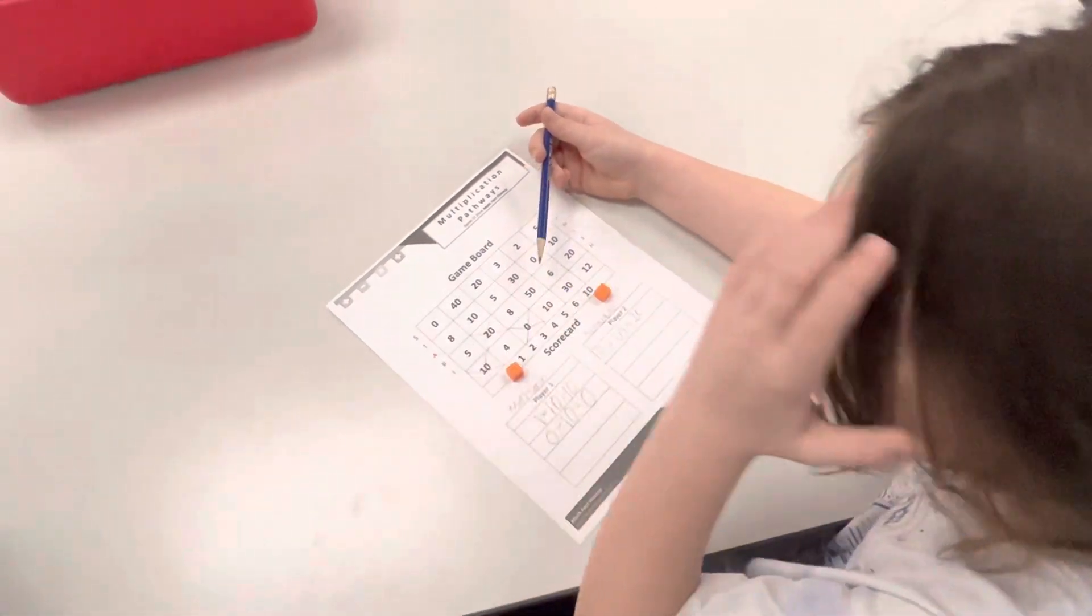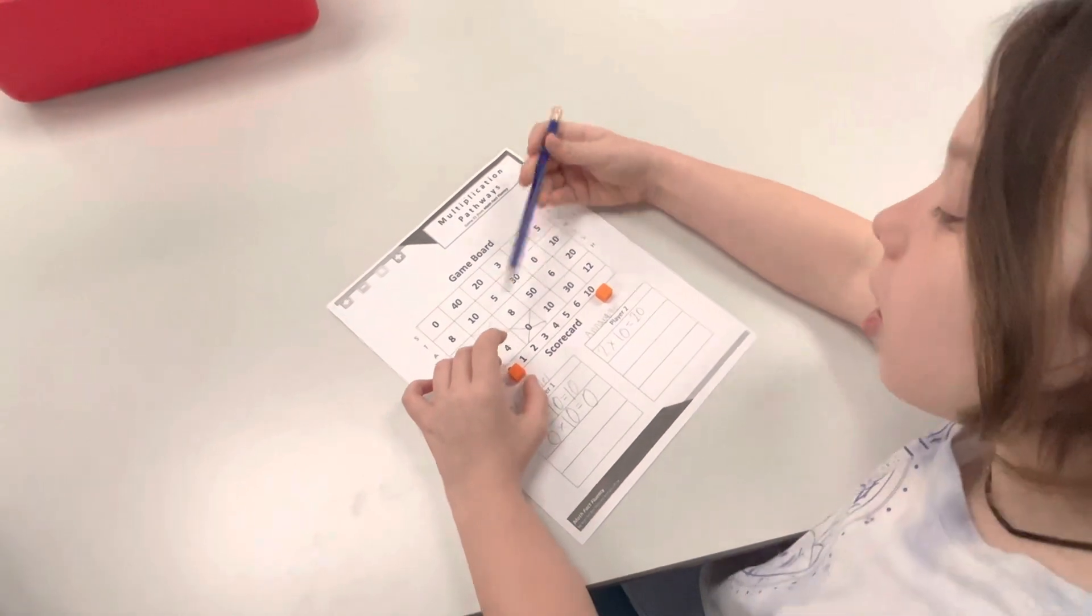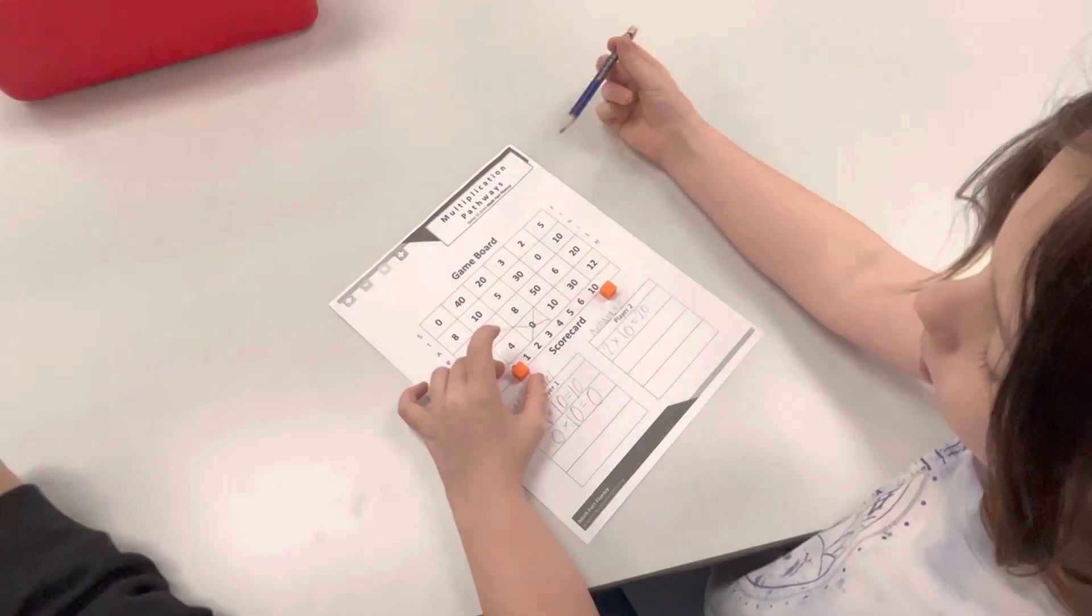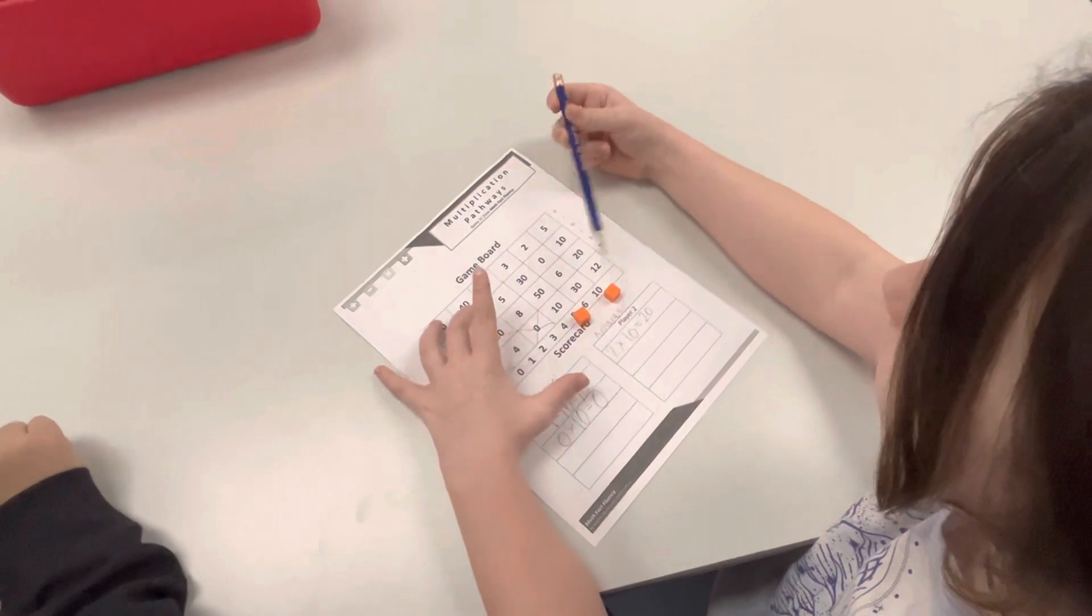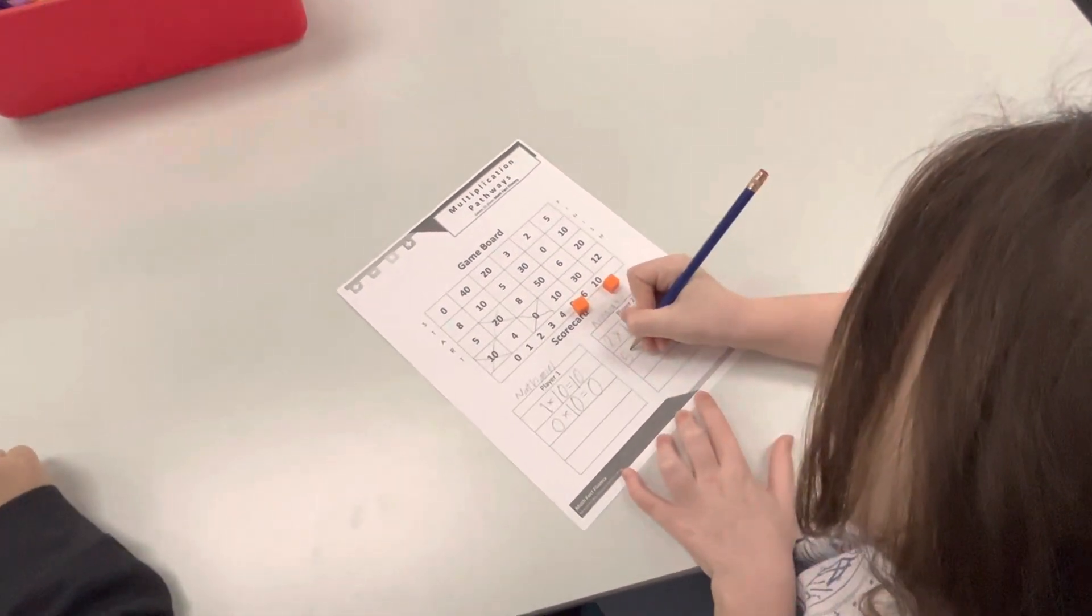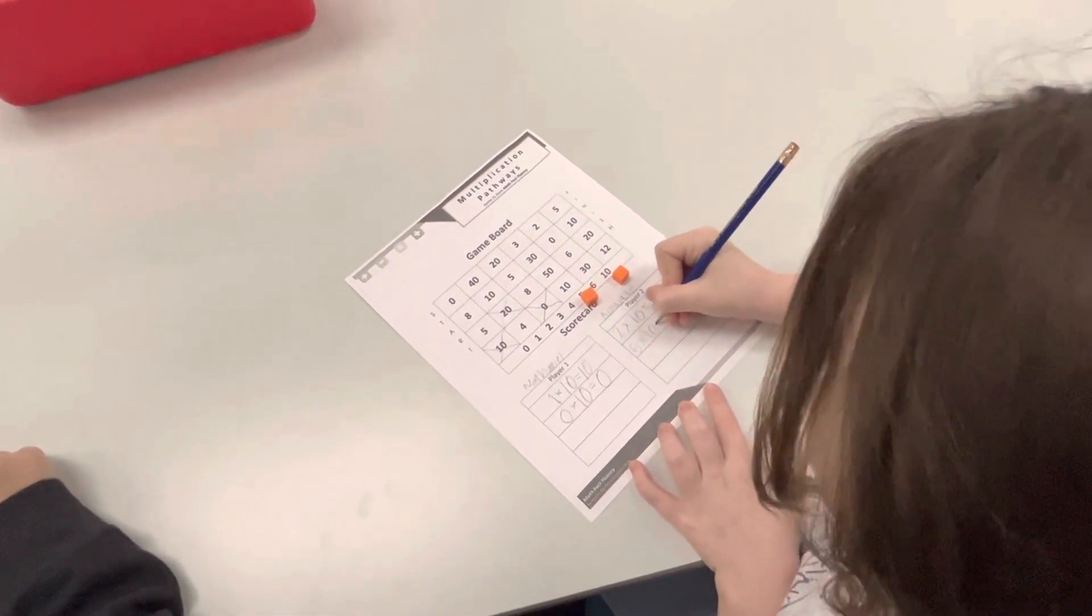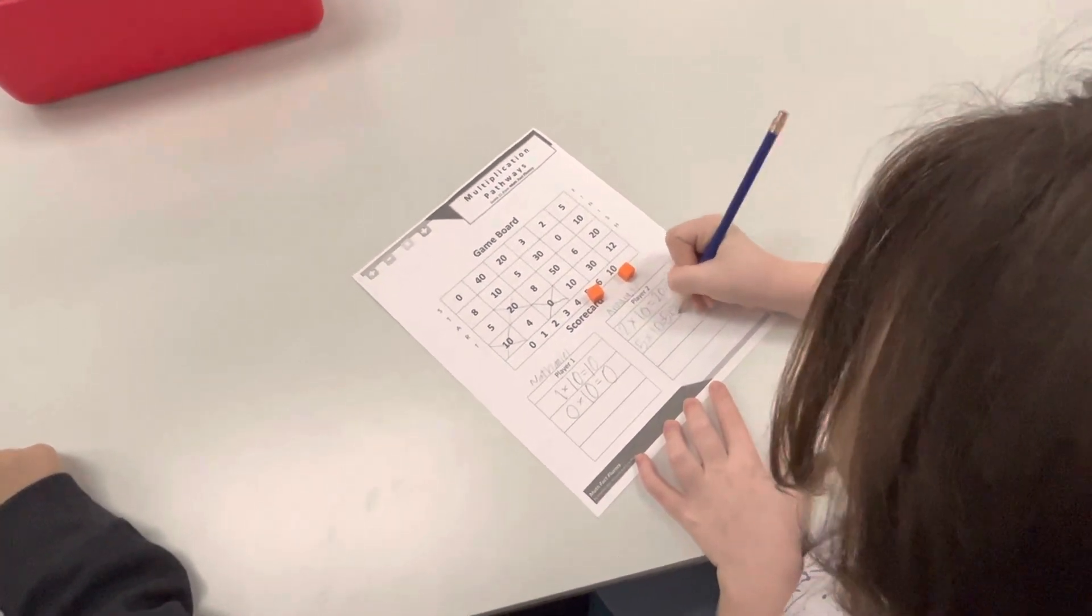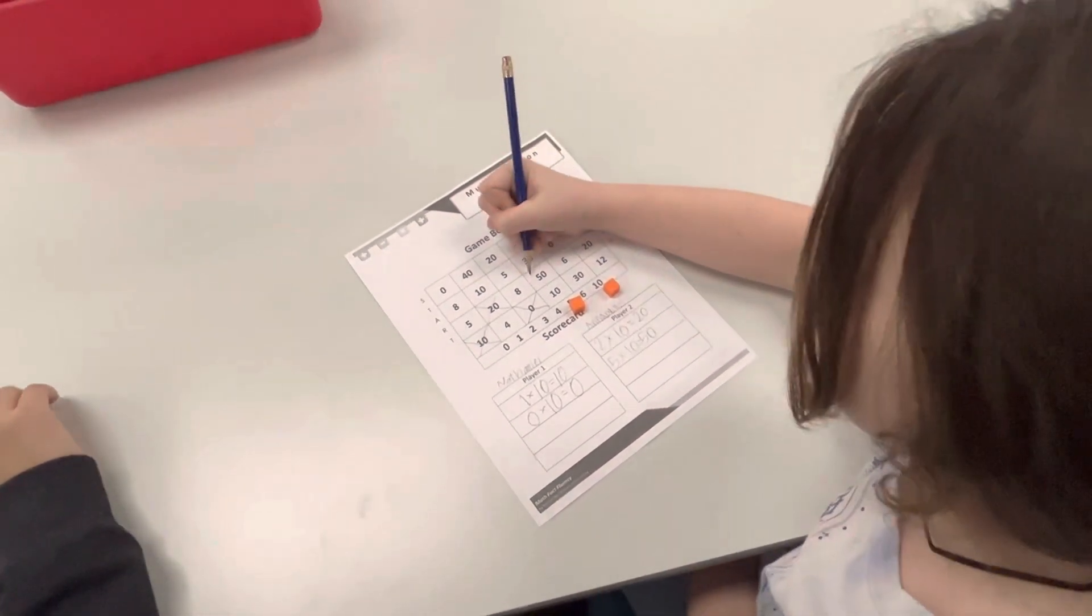Where could you move one of those to get 50 or 10? I would do zero and ten, but I like to do things new since you already did that, so I would do 5 times 10. Ooh, excellent. And so which one do you get to cross off? 50. Excellent.